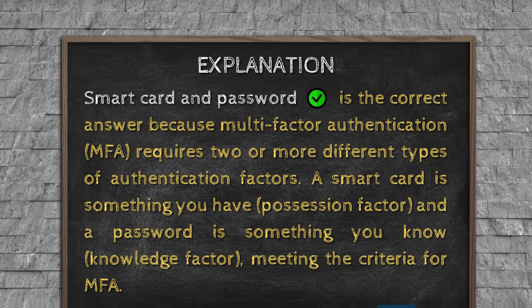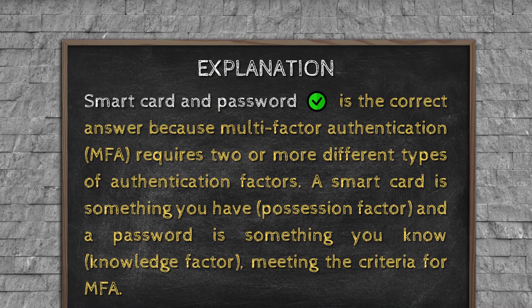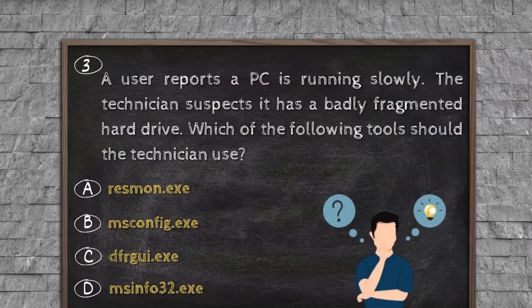Explanation. Smart card and password is the correct answer because multi-factor authentication (MFA) requires two or more different types of authentication factors. A smart card is something you have (possession factor), and a password is something you know (knowledge factor), meeting the criteria for MFA.